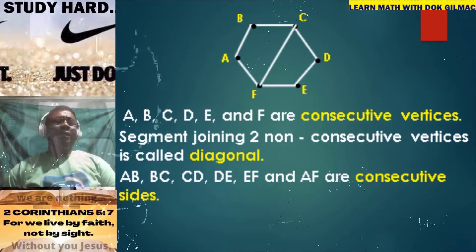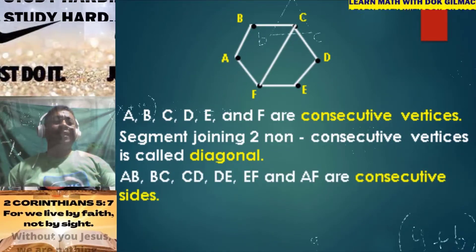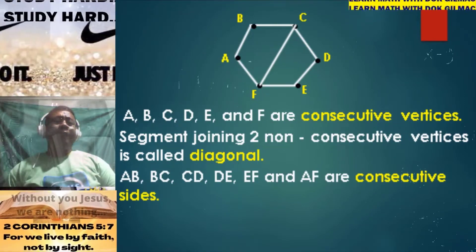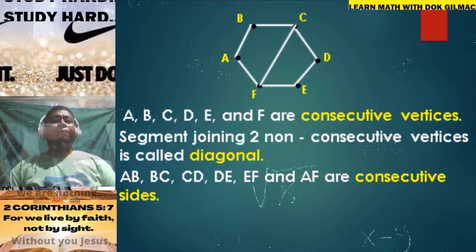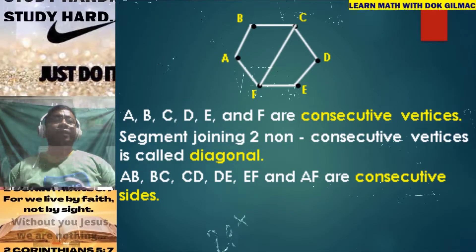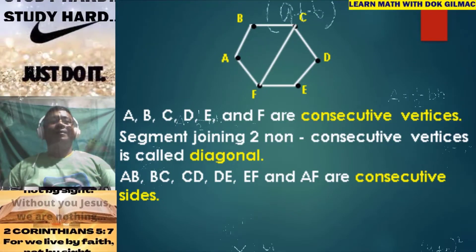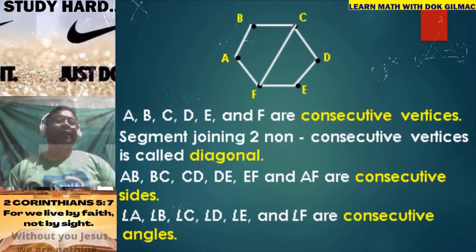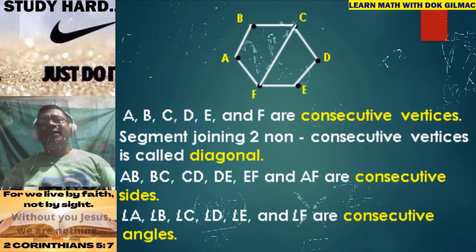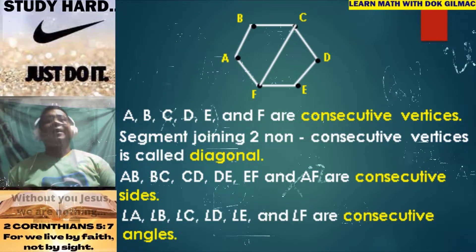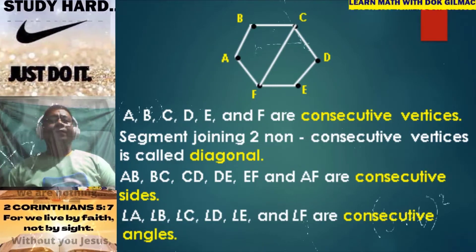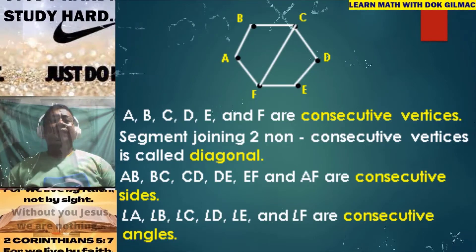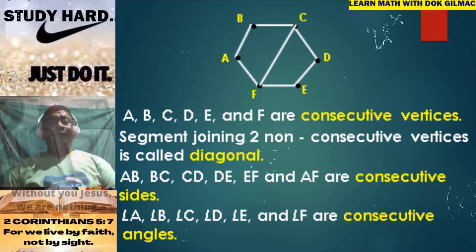Segments AB, BC, CD, DE, EF, and AF are consecutive sides. While angle A, angle B, angle C, angle D, angle E, and angle F are what we call consecutive angles. Take note of that.